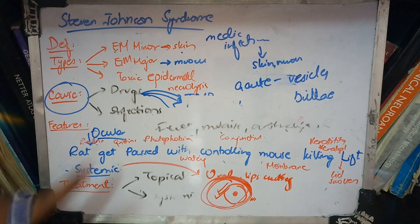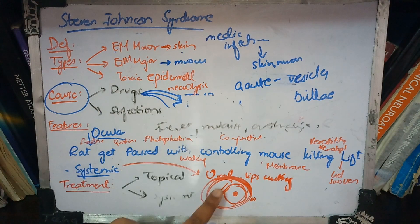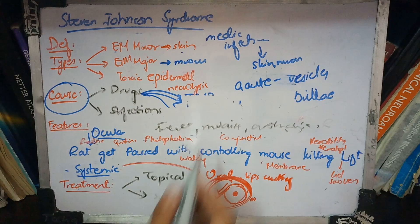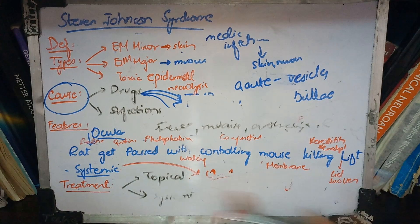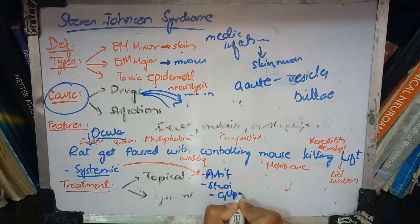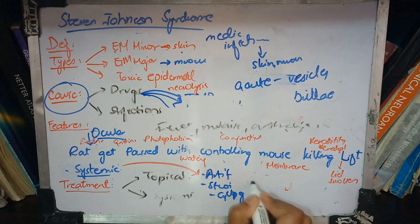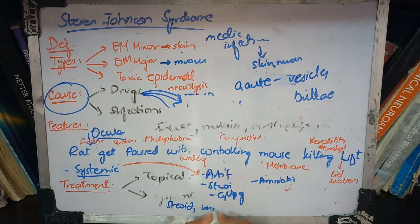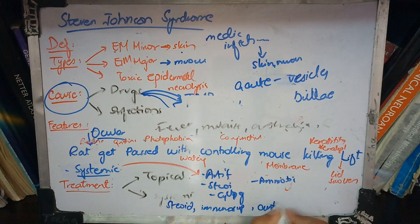For treatment, topically we give cycloplegics to relieve spasm, and artificial tears to remove dryness. Steroids are also given topically. In severe cases, conjunctival or corneal transplant may be needed. Systemically, we give steroids and immunosuppressive drugs to counter the hyperimmune response. If patients cannot produce adequate antibodies, intravenous immunoglobulins may be administered.